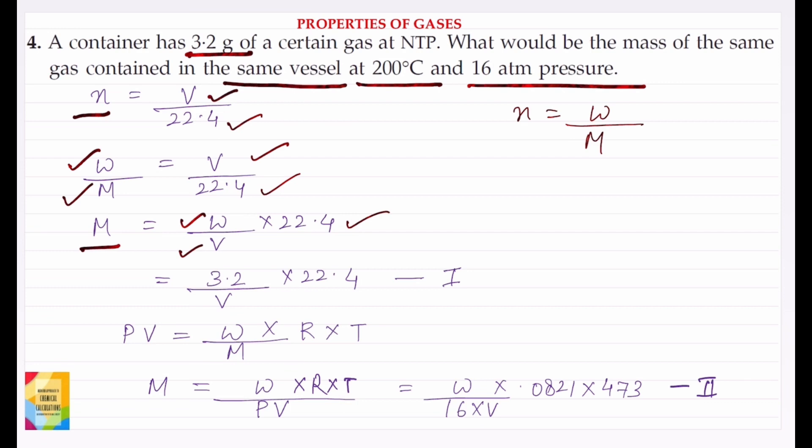In the question given, weight of the gas is 3.2 grams. So we'll put the value of W as 3.2, and the equation becomes 3.2 divided by V times 22.4. This is equation number 1.